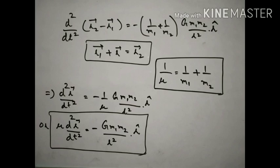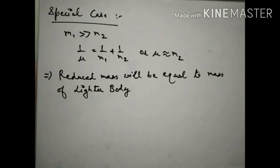This is the equation of motion for the reduced mass. There is a special case: if M1 is very much larger compared to M2, then the reduced mass will be approximately equal to M2, because M1 is very large and is in the denominator so it approaches zero. So if two bodies are given and one is much heavier than the other, the reduced mass will be approximately equal to the mass of the lighter body.